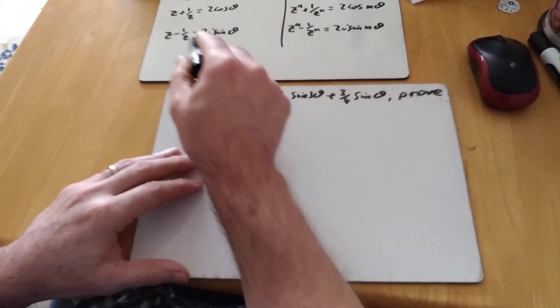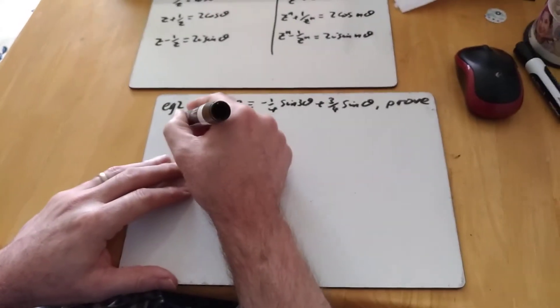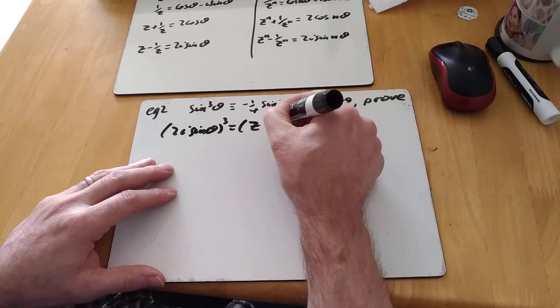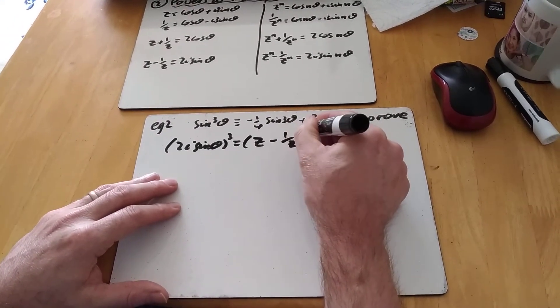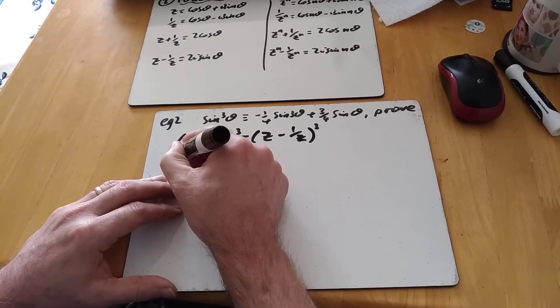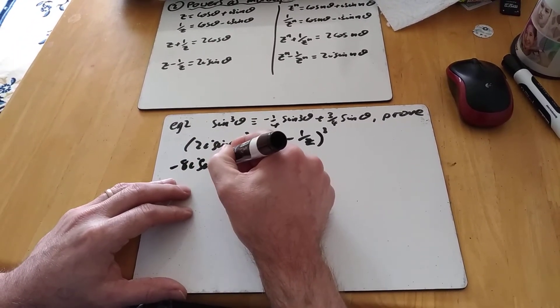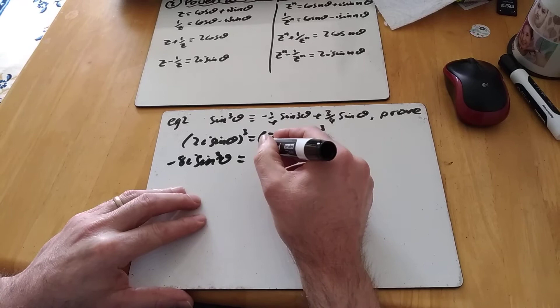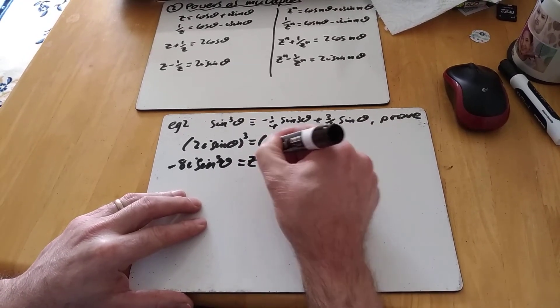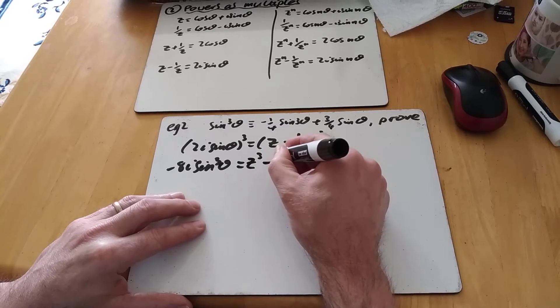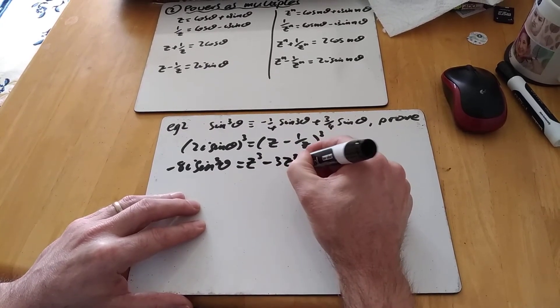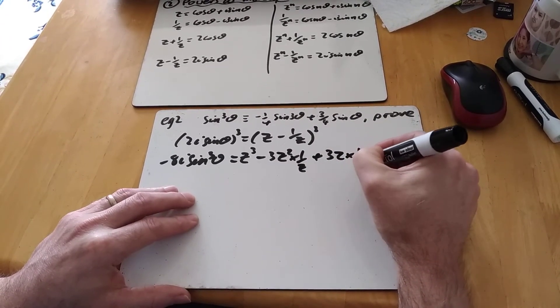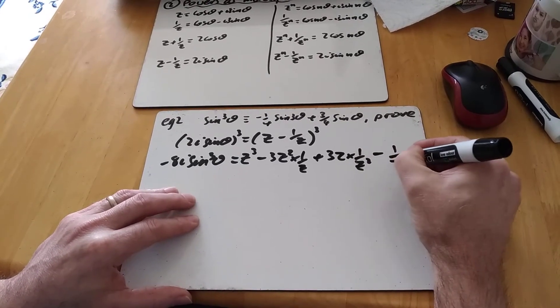So, because we've got sine cubed in, I'm going to take this term here and do 2i sine theta cubed, which is z minus 1 over z cubed. And cubed this one, I get 8. In fact, I get minus 8i sine cubed theta. And z minus 1 over z, when I expand it, gives me z cubed minus 3z squared times 1 over z plus 3z times 1 over z squared minus 1 over z cubed. There's less to write in this one.